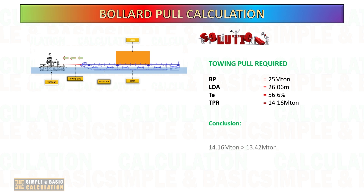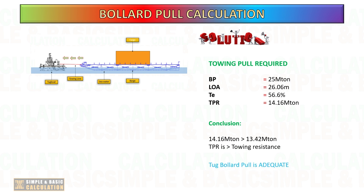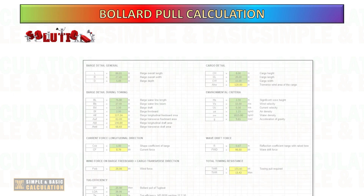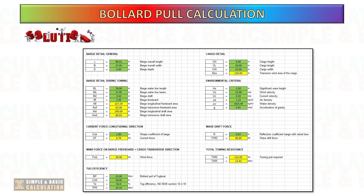For the towing pull required: in this example, we plan to use two tugboats, each with a 25-ton bollard pull, and the length of the tugboat is 26.06 meters. Based on the Guidelines for Marine Transportations, 0030-ND, refer to the formula to get the estimation of tug efficiency. Our proposed tug is sufficient to pull the 280-feet barge based on the environmental criteria.